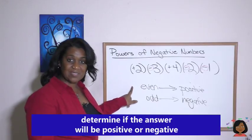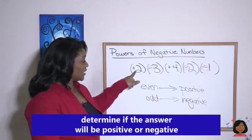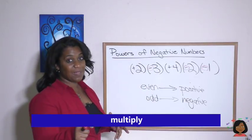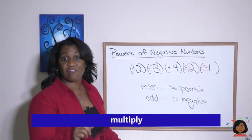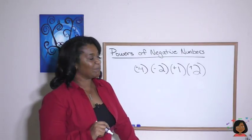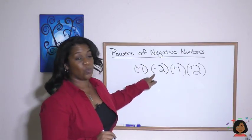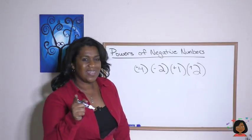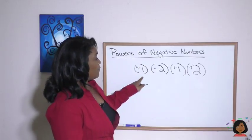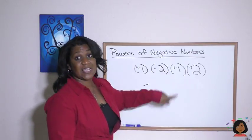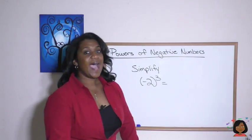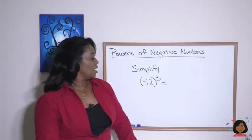So your job is: add up the number of negatives first, determine if your answer is going to be positive or negative, and then you can just multiply your numbers without worrying about the signs because you've already figured them out. Let's try putting that tip in action. We have only one negative, so our answer is going to be negative. Now just do the multiplication: 4 times 2 is 8; 8 times 1 is 8; 8 times 2 is 16. Negative 16 is your answer.